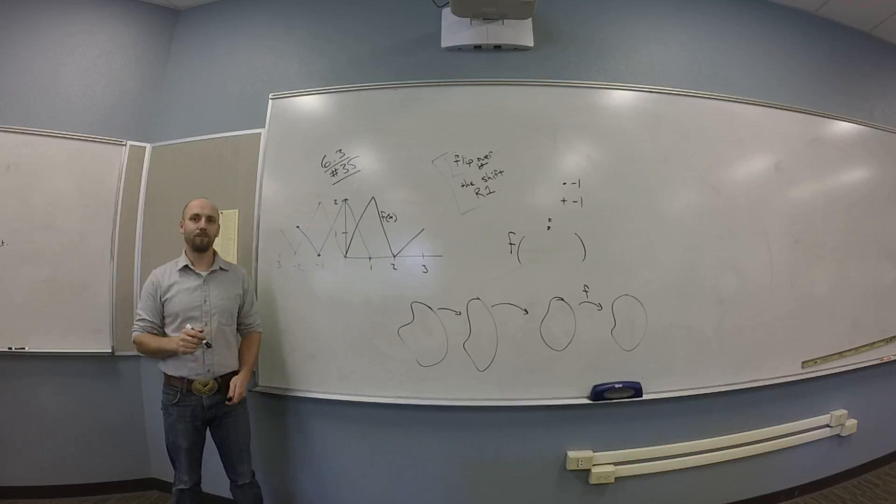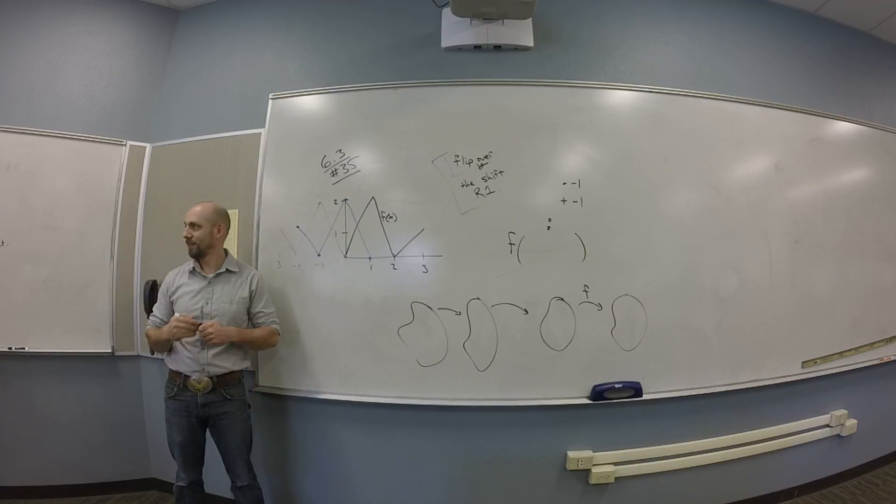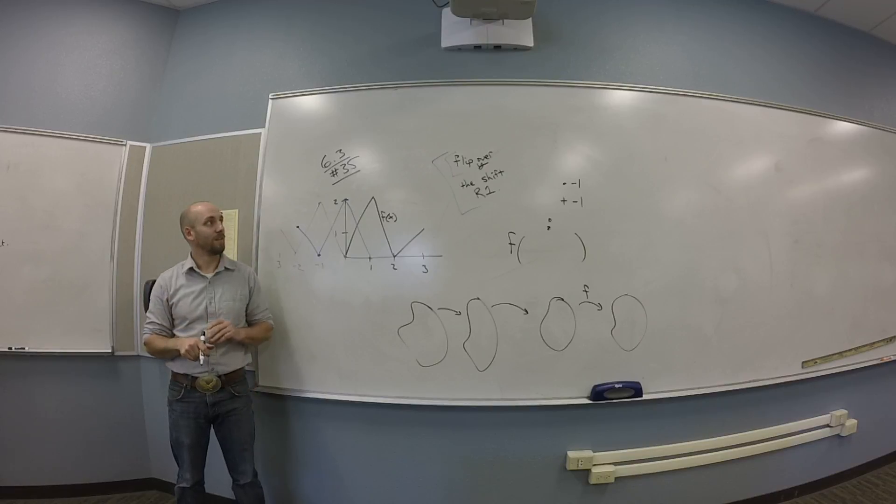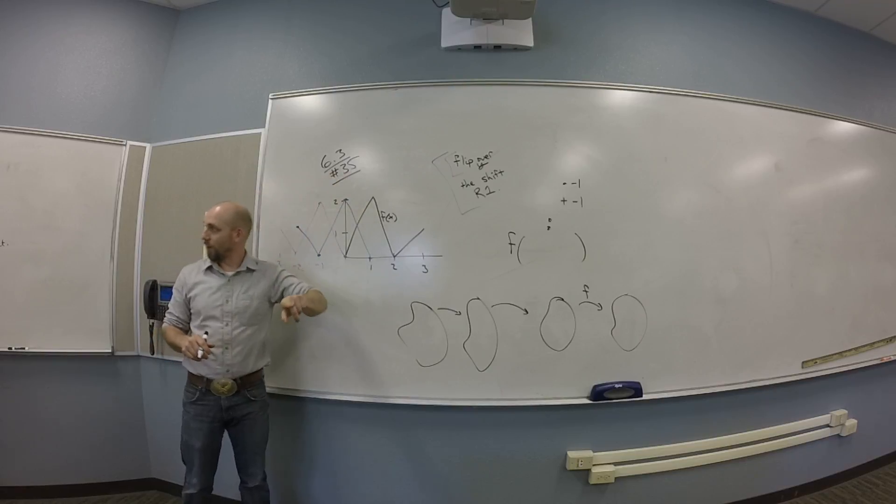One of those is going to be a multiply by negative 1. The other one's going to be an add negative 1. Which one comes first? Multiply by the Y. Because you're going to do the flip over the Y first. The flip over the Y happened first. So that's the one I need to do first.